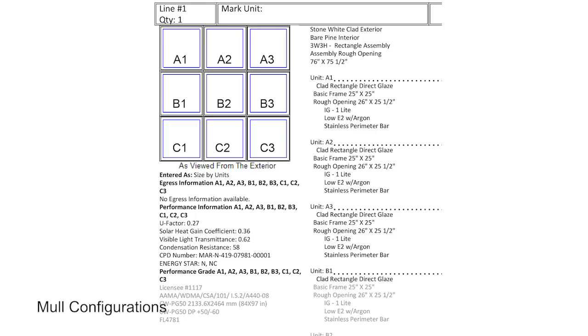Marvin uses standard mull configurations such as the one shown here. All mull configurations are diagrammed with the same rules as viewed from the exterior. The alphabetical label denotes the horizontal row starting with the top. The numerical label denotes the vertical column starting from the left.